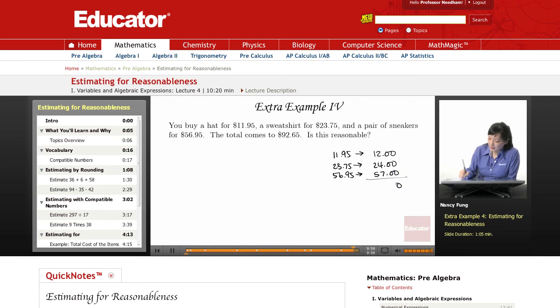Now let's add this up and check. $12, $24, $57... that gives us $93.